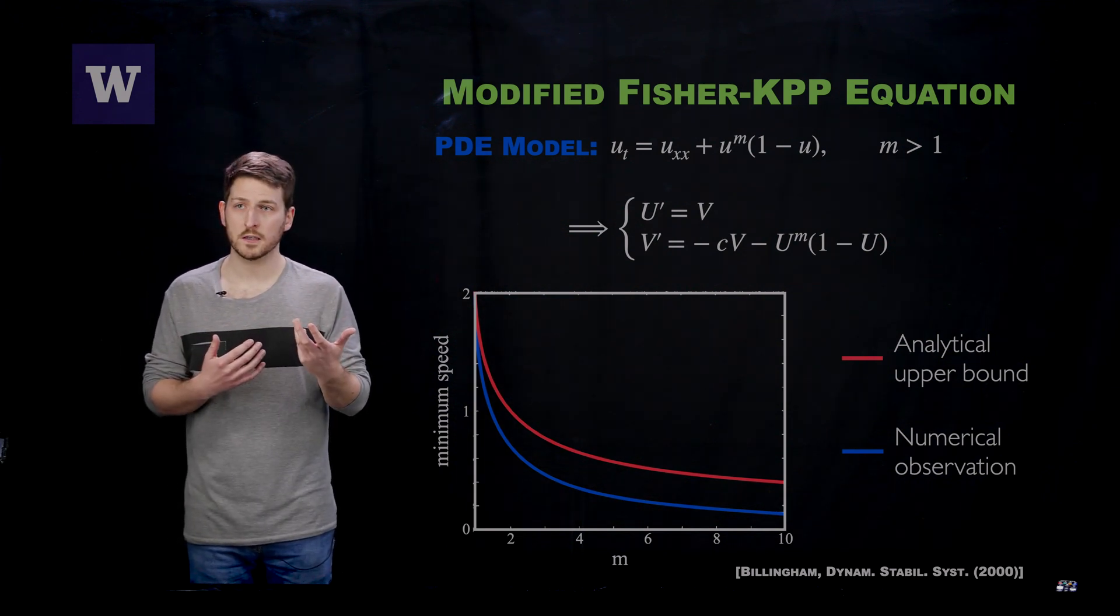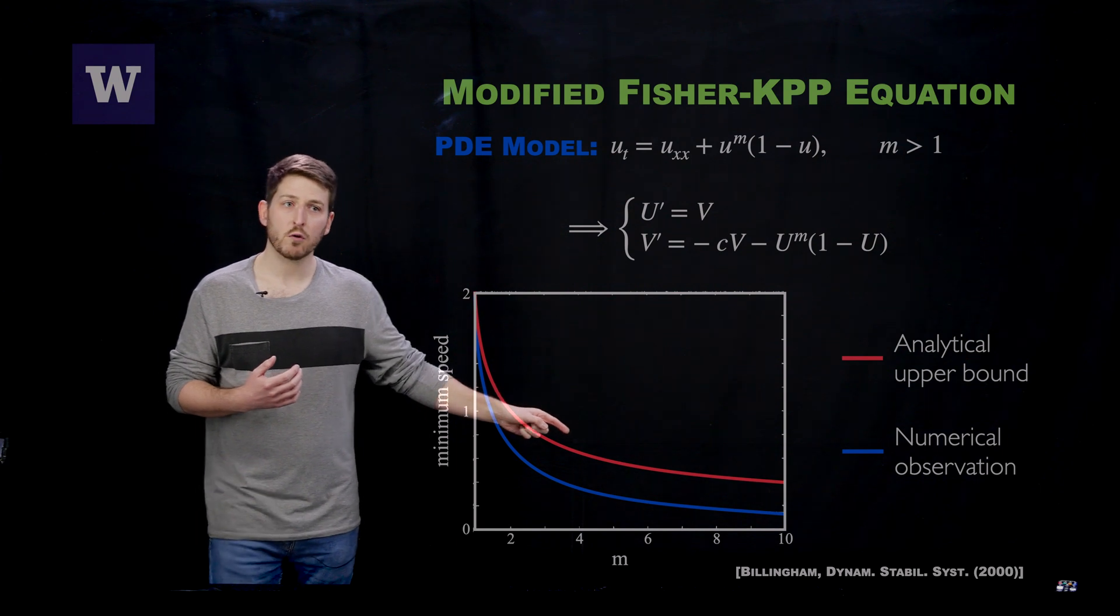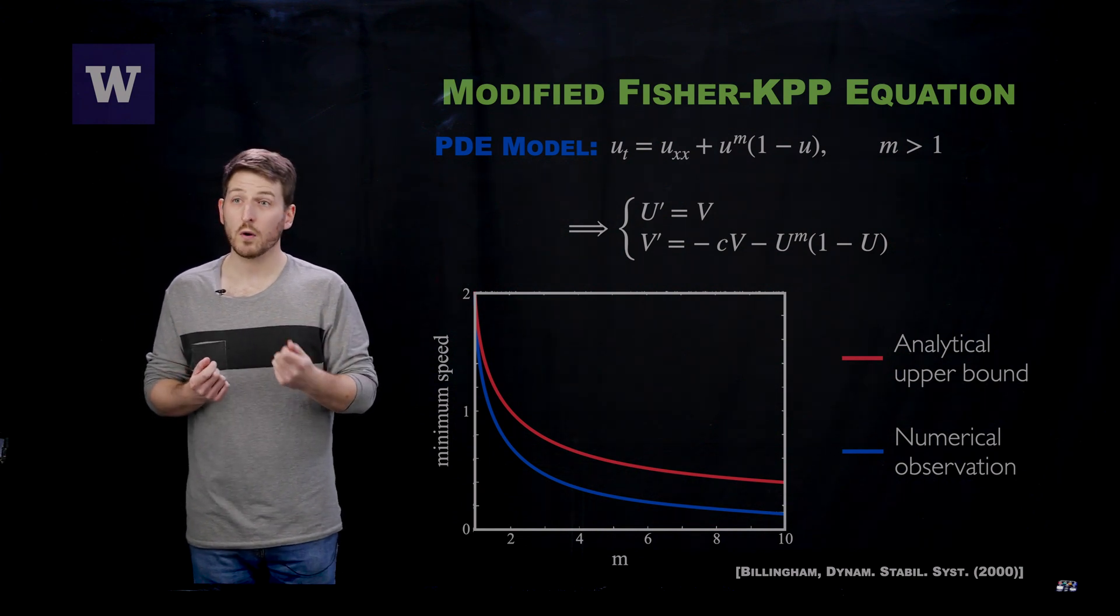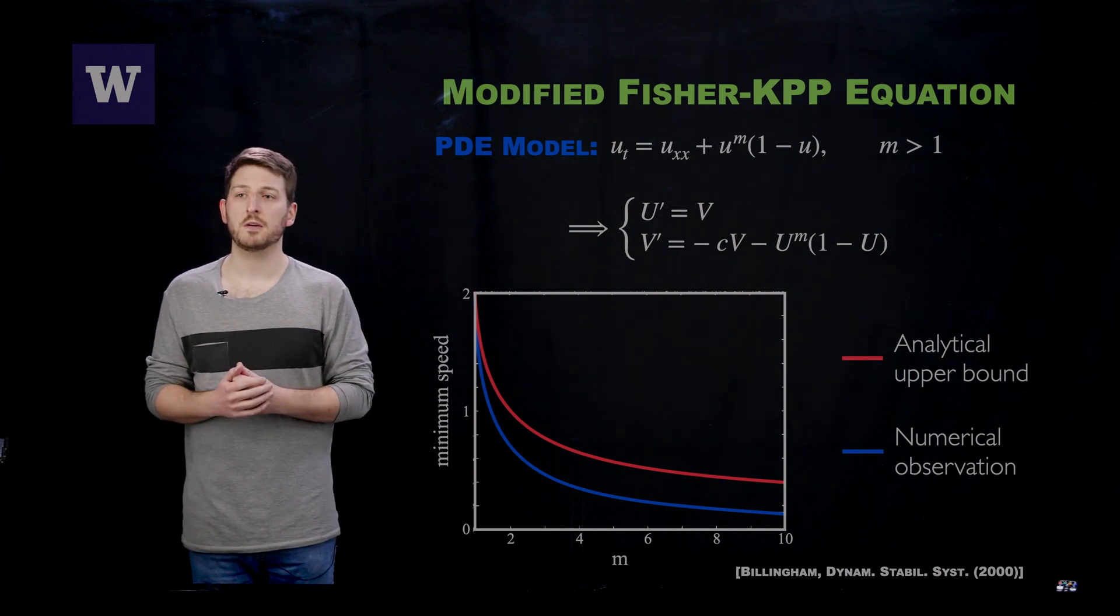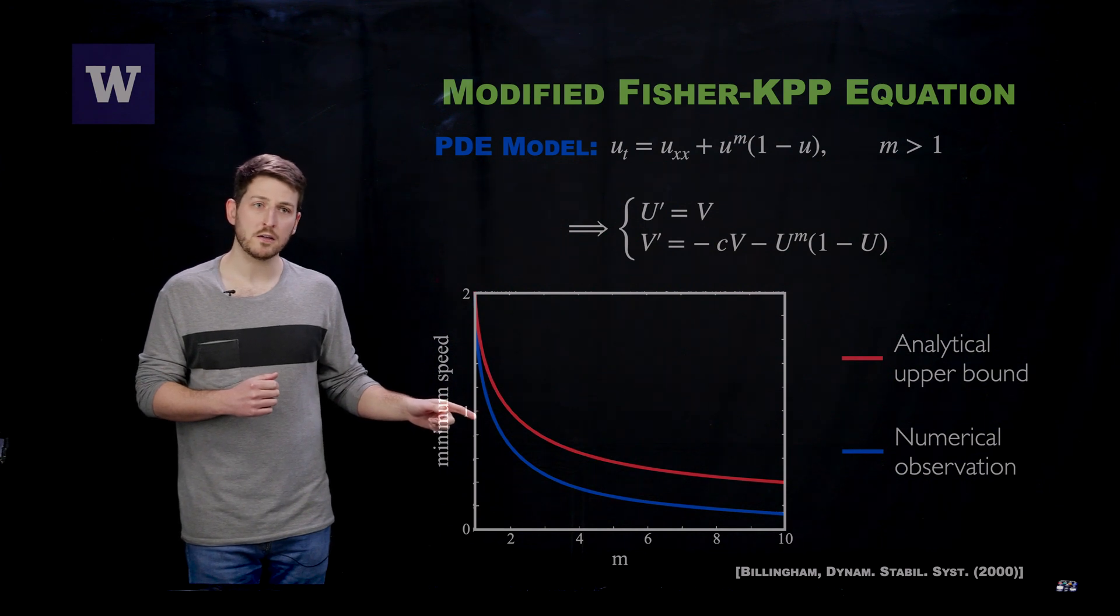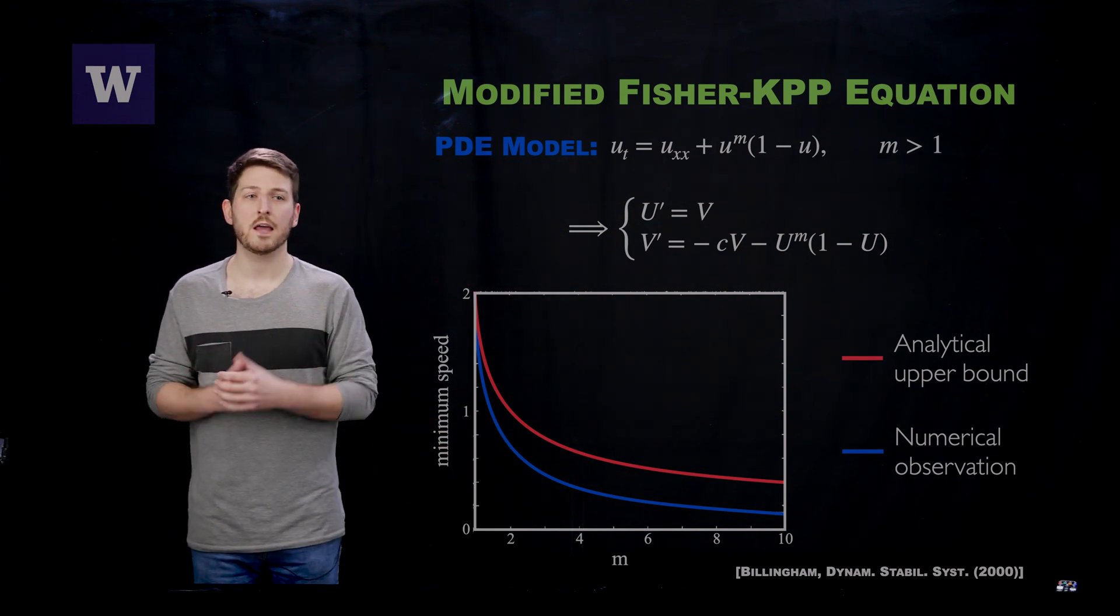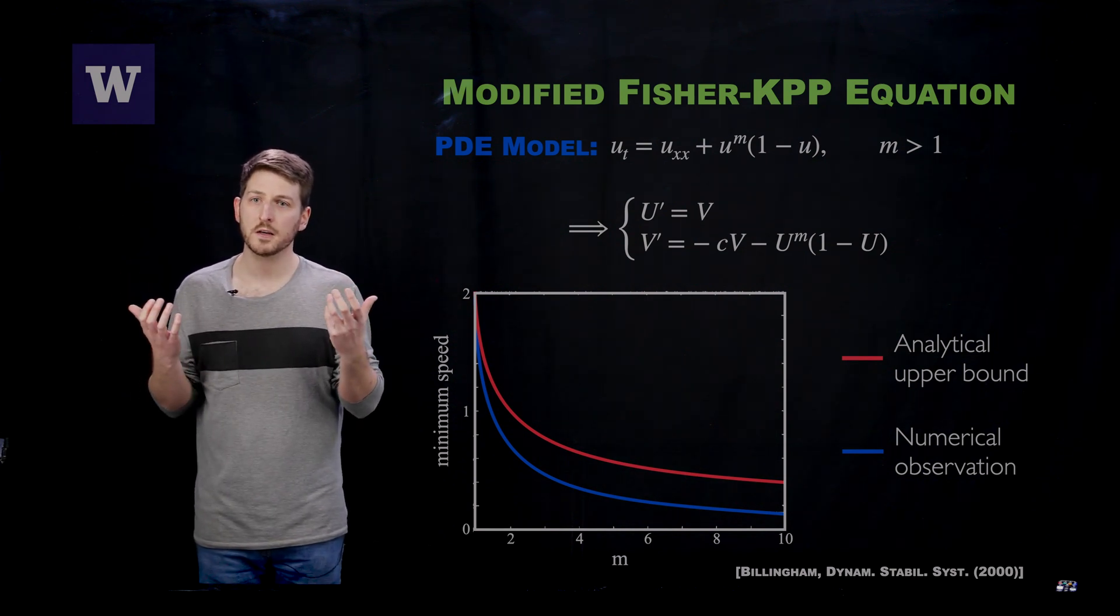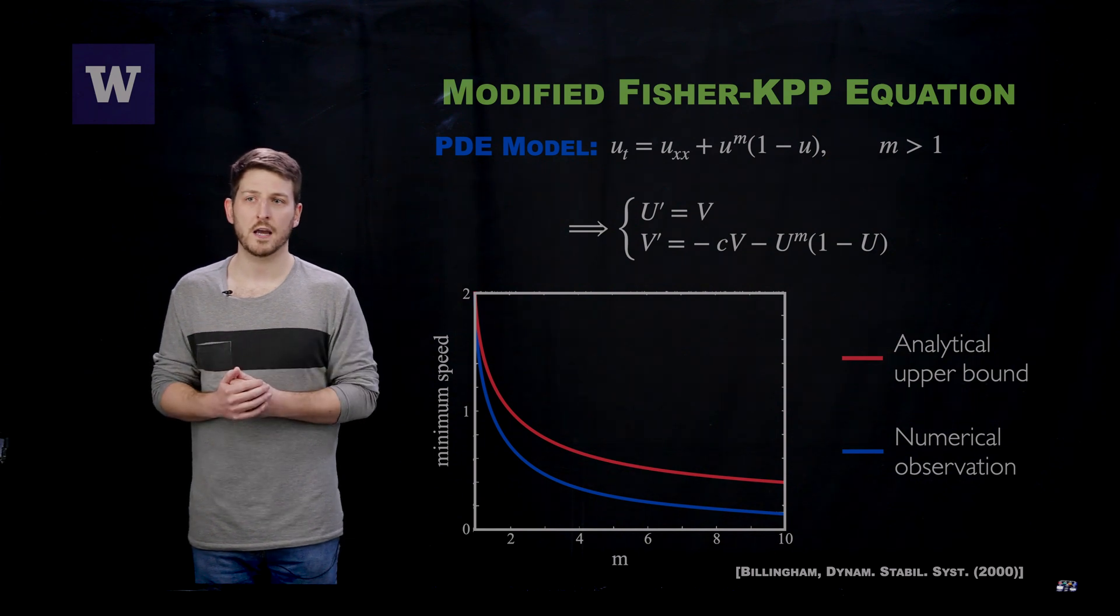In a 2000 paper, Billingham decided to analyze this system, and he was able to show that, again, infinitely many traveling waves exist. He showed that there is this red curve as a function of the exponent m for which every speed above this curve exists for a traveling wave solution. What he did not show is that this is the exact minimum speed. That is, he did not rule out the possibility of having speeds go slower than his analytic values. In particular, he ran some numerical simulations that showed he could actually observe traveling waves that go much slower than his analytical upper bound on that minimum wave speed. This discrepancy between the analysis and the numerics has motivated myself and my collaborators to start looking at new ways to analyze these and taking advantage of many of the computational tools we have at our disposal now.